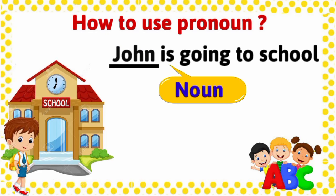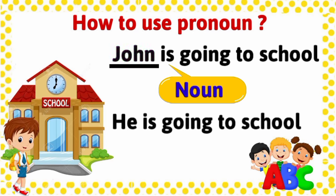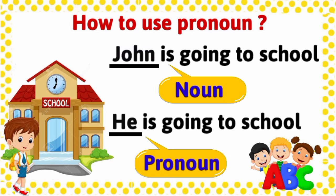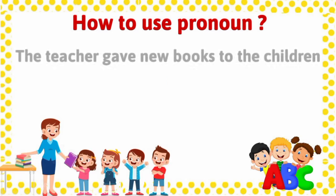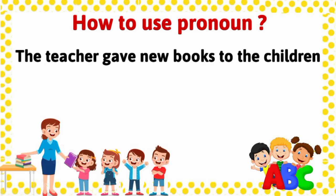'John is going to school.' Here, John is a noun as it's the name of a boy. Now we will see the use of a pronoun: 'He is going to school.' Here, 'he' is a pronoun — we used the word 'he' in place of John.